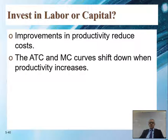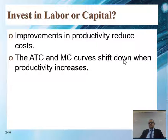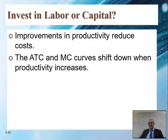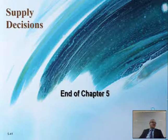Improvement in productivity will reduce cost. The ATC — average total cost — and marginal cost curves will shift down when productivity increases. And then it picks up and becomes very expensive. That's the end of chapter five.